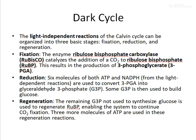In the fixation stage, an enzyme called ribulose bisphosphate carboxylase, or RuBisCO, catalyzes the addition of carbon dioxide to RuBP (ribulose bisphosphate) so that 3-phosphoglycerate is formed. In the second step, reduction occurs: six molecules each of ATP and NADPH are used to convert the 3-phosphoglycerate into glyceraldehyde-3-phosphate, and some glyceraldehyde-3-phosphate is then used to build glucose. In the regeneration step, the remaining glyceraldehyde-3-phosphate is used to regenerate RuBP, enabling the system to continue carbon dioxide fixation.